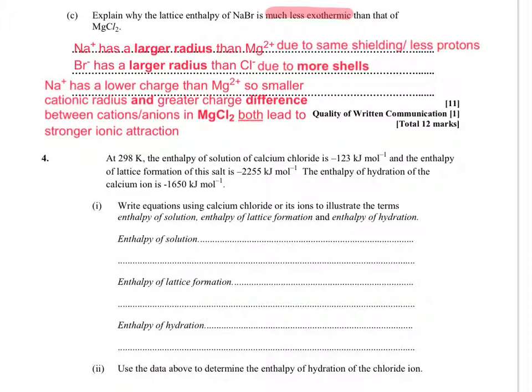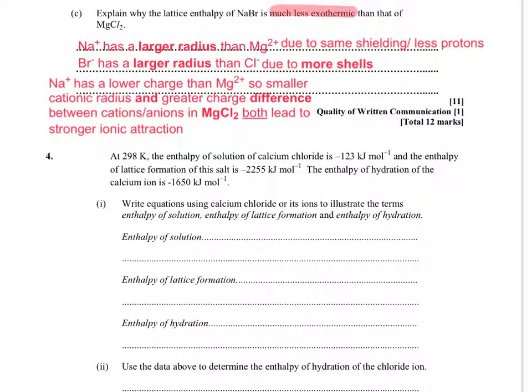So it's a question of putting that idea into words. Sodium plus is a lower charge than Mg2 plus, so smaller cationic radius, cationic meaning the positively charged ions only, and greater charge difference between cations and anions in MgCl2 both leads to stronger ionic attraction. You could have said the opposite about NaBr. So let's look at the final question. So if we bring the page down.